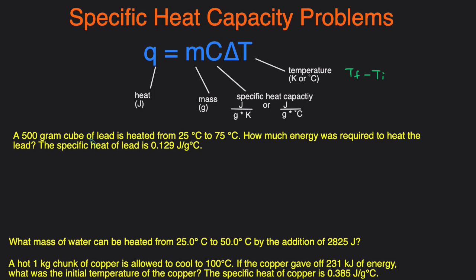So the first problem: a 500 gram cube of lead is heated from 25 degrees Celsius to 75 degrees Celsius. You have the initial temperature and the final temperature, meaning you can solve for delta T. How much energy — which is asking us for heat or Q — was required to heat the lead? The specific heat capacity of the lead is given. We have the change in temperature, the mass, and the specific heat, so we are solving for Q.